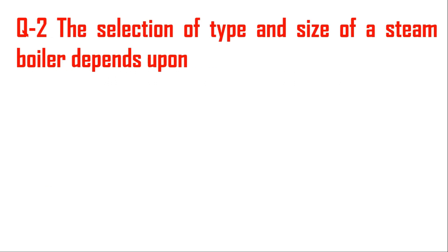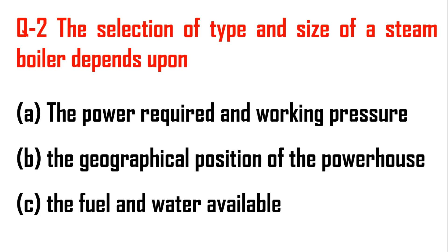Question number two: the selection of type and size of a steam boiler depends on many parameters. The first parameter is the power required and working pressure. The second is the geographical position of the power house — depending on position we can use horizontal or vertical boilers, high pressure, low pressure, or medium pressure boilers. It will also depend on the fuel and water available.